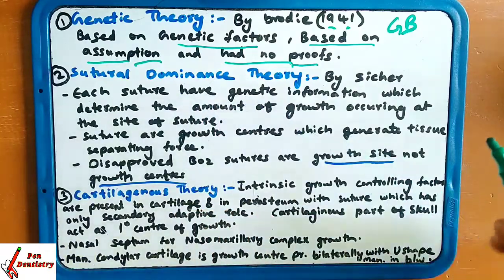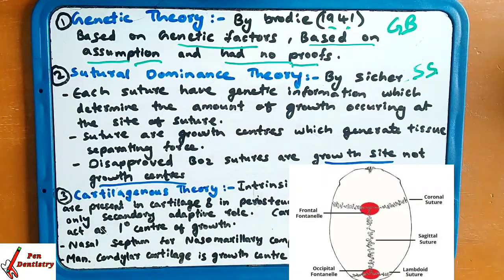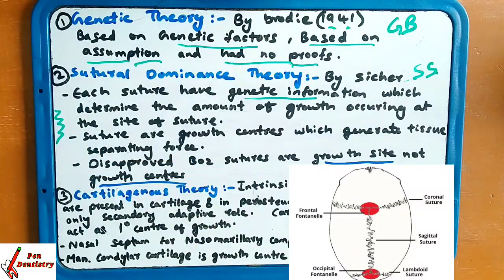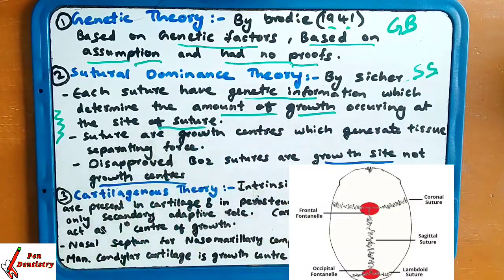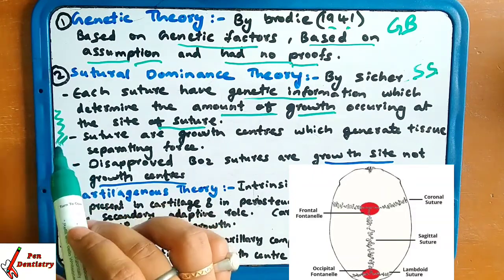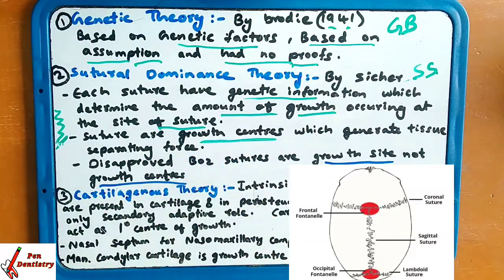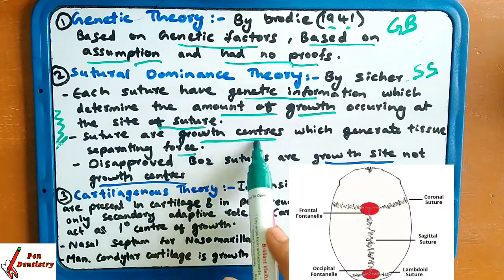The second one is sutural dominance theory, given by Sischer. What Sischer said is that each suture has genetic information which determines the amount of growth occurring at the site of the suture. This means every suture has a growth site — how much growth will take place is encoded in the suture. Sutures are growth centers which generate tissue separating force.